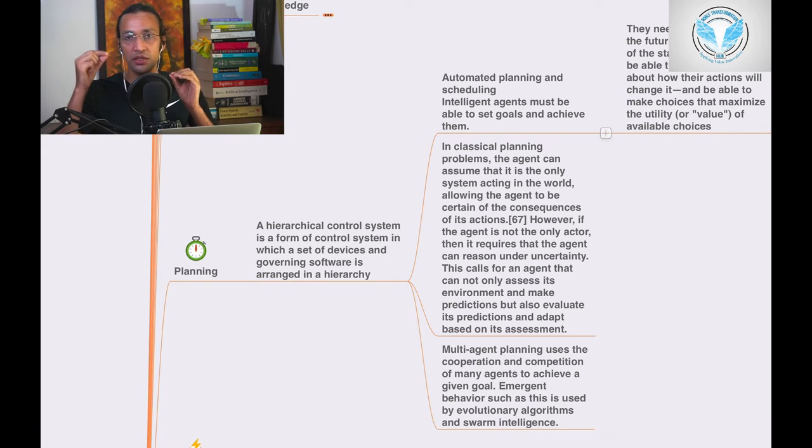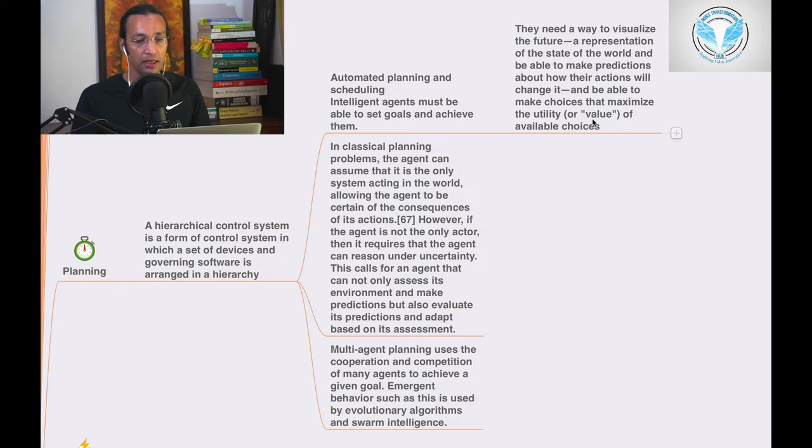They need a way to visualize the future, a representation of the state of the world, and be able to make predictions about how their actions will change it, and be able to make choices that maximize the utility value of available choices - finding the optimized way which gives you greater value and optimization.